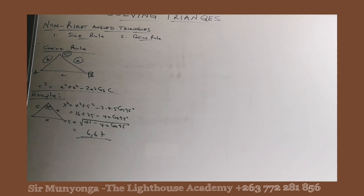We get 6.67. So that's how we make use of cosine rule when you are required to find the missing side. What if you are required to find the missing angle?